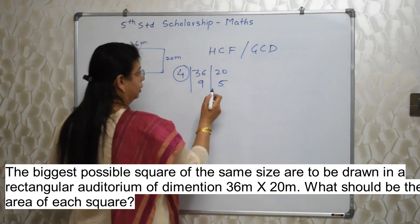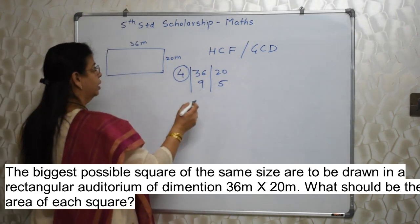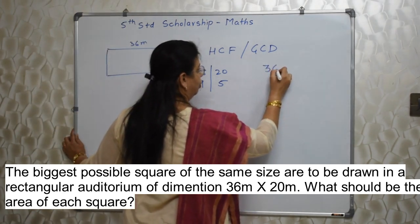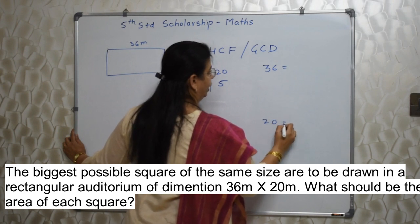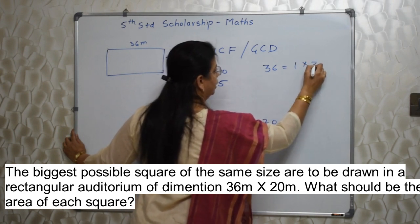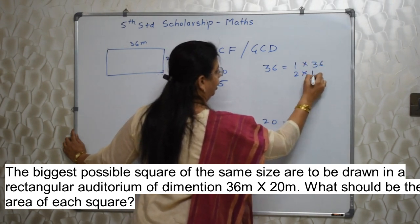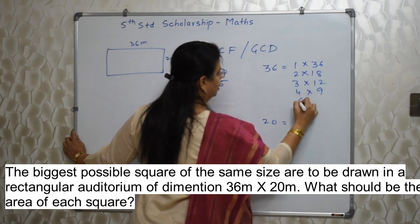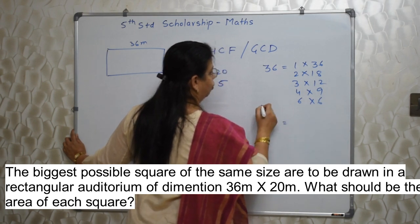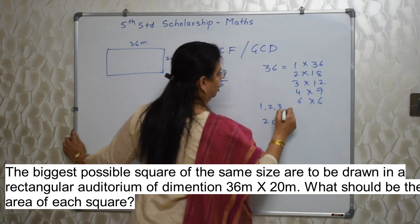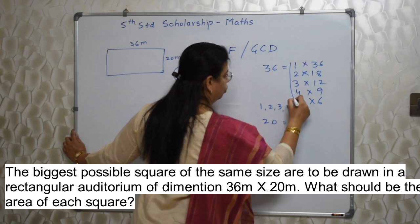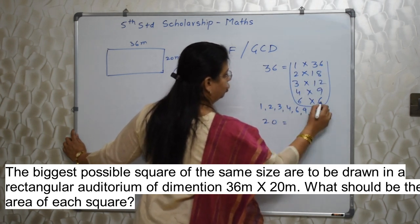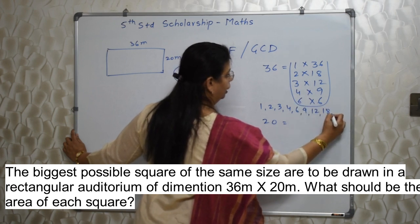If you don't know this method, there is another method to find out HCF. First we need to find out the factors of 36 and factors of 20. For 36: 1×36, 2×18, 3×12, 4×9, 6×6 — so the factors are 1, 2, 3, 4, 6, 9, 12, 18, 36. Write them out so you don't miss anything, and 6 should be taken only once — don't write it twice.